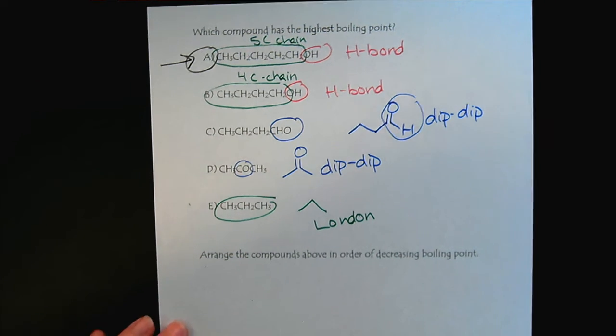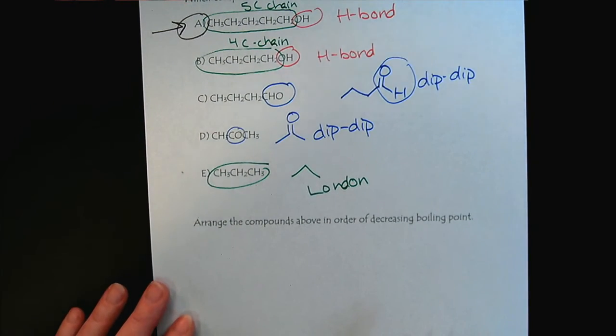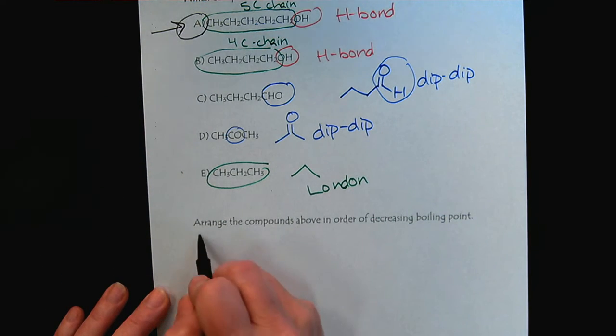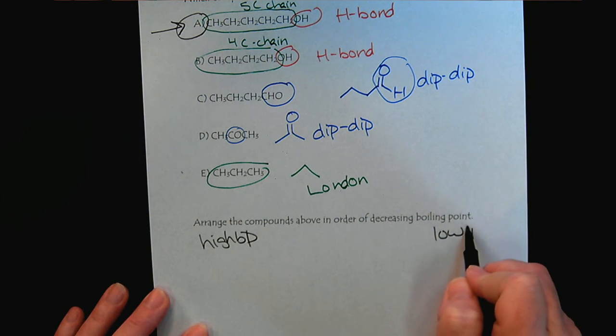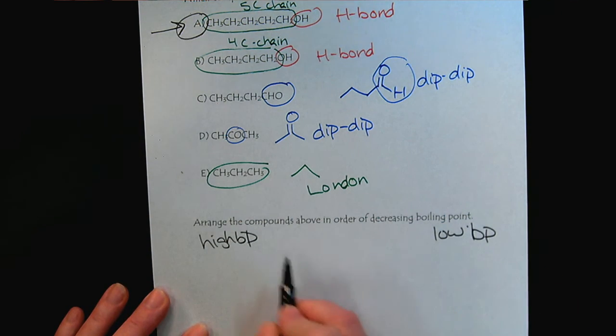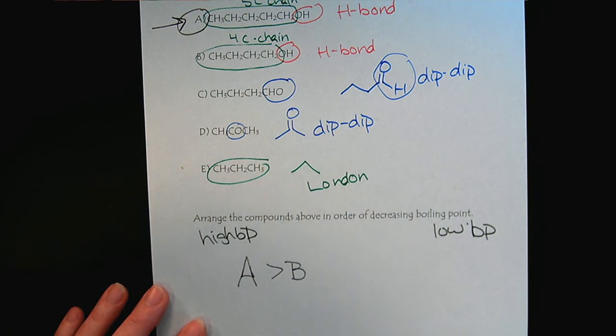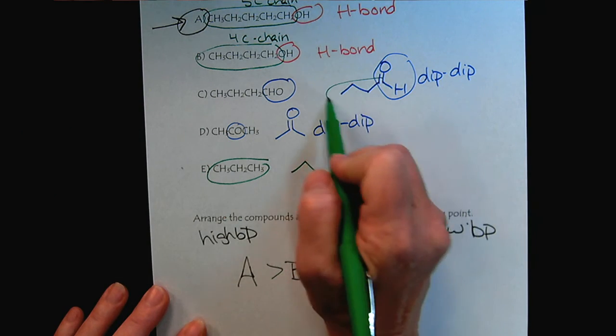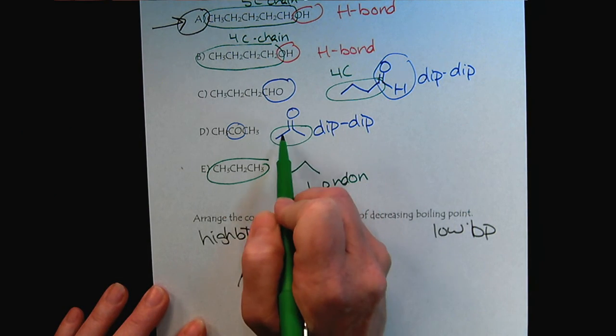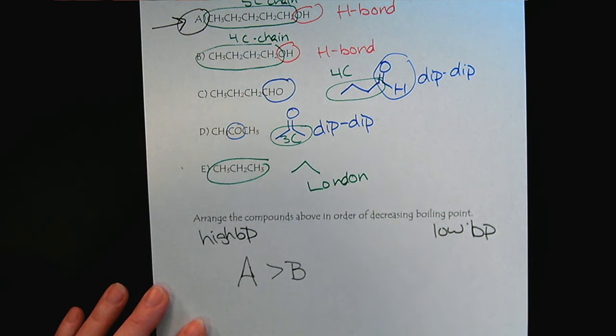And then just to wrap this up, if we arrange the compounds in order of decreasing boiling point, high boiling point to low boiling point, then A is definitely has a higher boiling point than B. And then it would come to the dipole-dipoles. And here, we have four carbons. And here we only have three carbons. So compound C would have a higher boiling point than D.